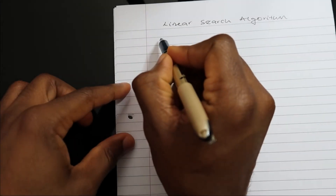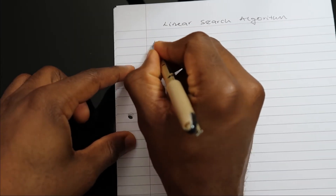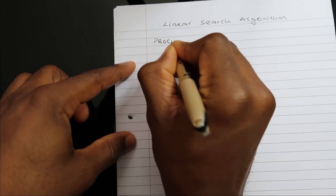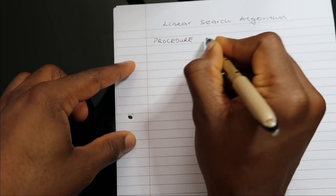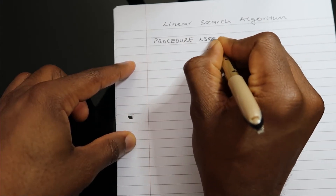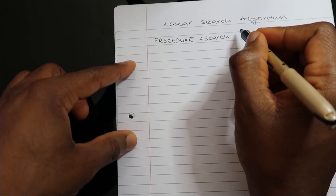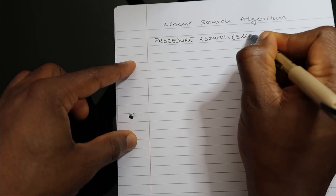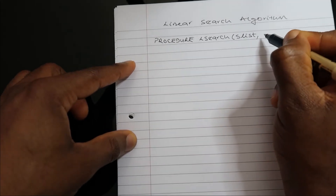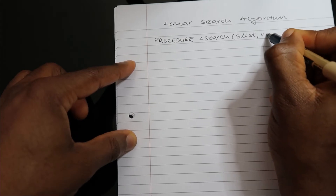As you may have seen in my other video on how the linear search algorithm works, in this video I'm going to be writing pseudocode for the linear search algorithm. To do that, I'll start by writing a procedure. I'll declare my procedure and call it L_search — that's just linear search. In this procedure, I'll pass in two arguments: my list, which is the list I'm searching, and the value that I'm looking for.